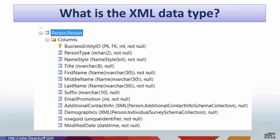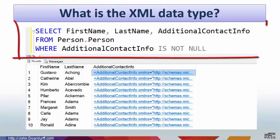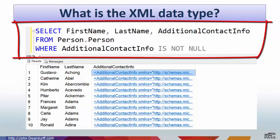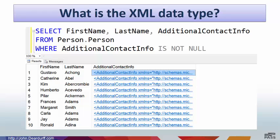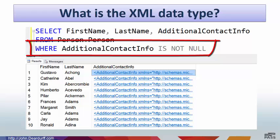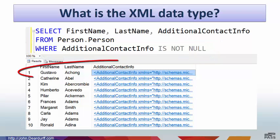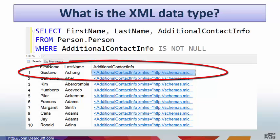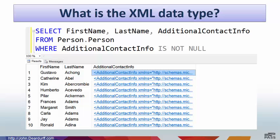So, if I write a SELECT statement that's retrieving data from an XML column, it will look something like this — where I've selected first name, last name, additional contact info from person.person. Since there are a lot of people, I just wanted to see the records that actually had additional contact info, so I use the WHERE additional contact info IS NOT NULL. You can see that Gustavo Achong has additional information. I will bring this up in the demonstration coming up, just to show you what that XML information will look like.